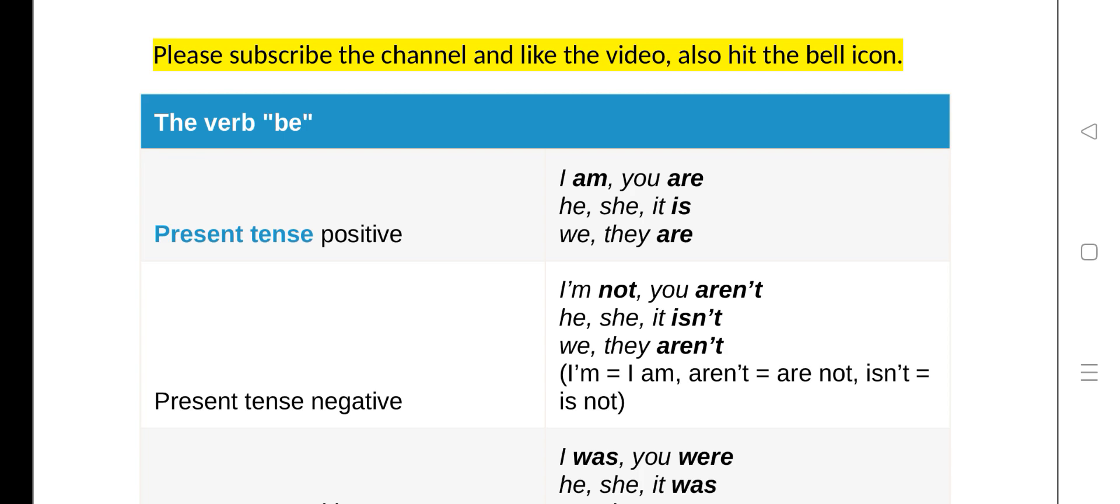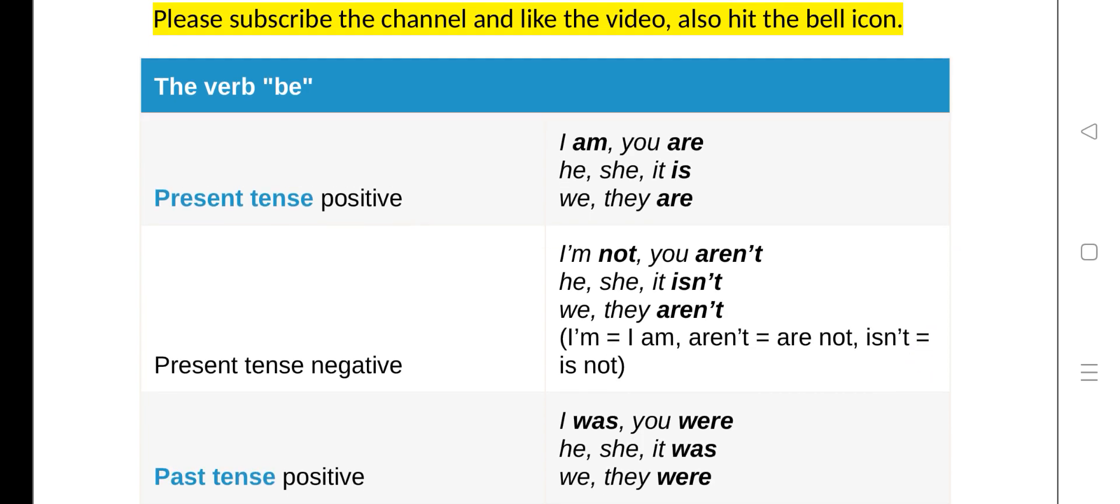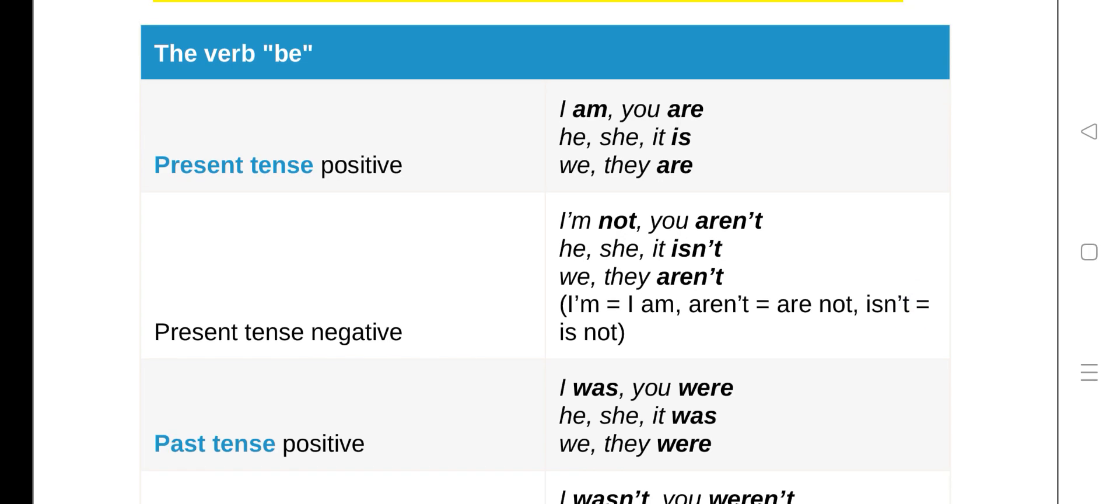Examples are: I am, you are, he/she/it is, we/they are. And also we can use it in the present tense negative.